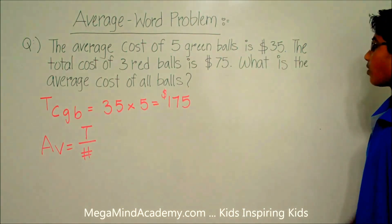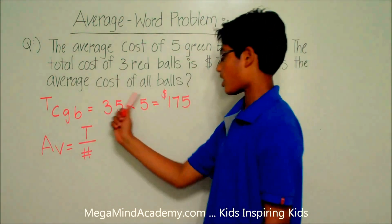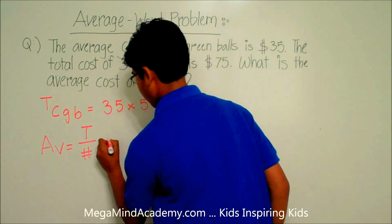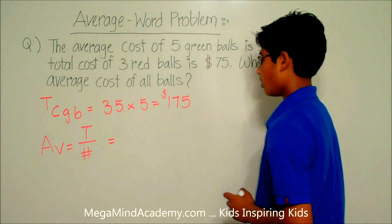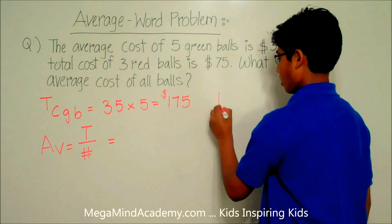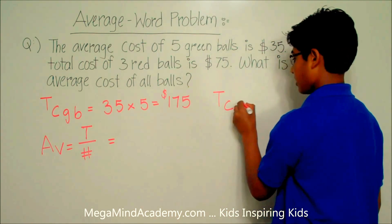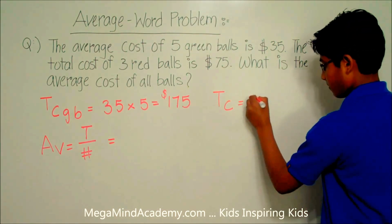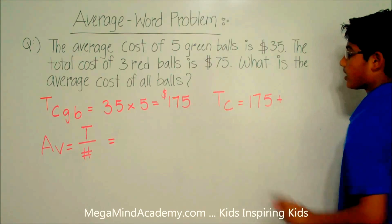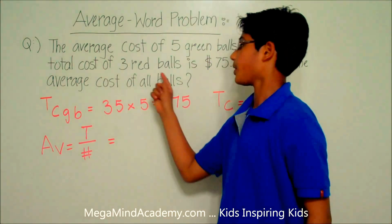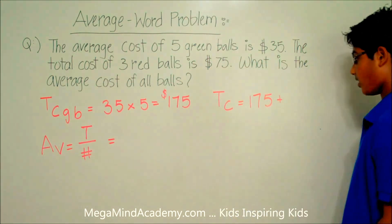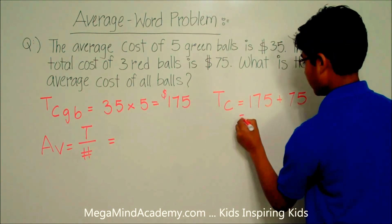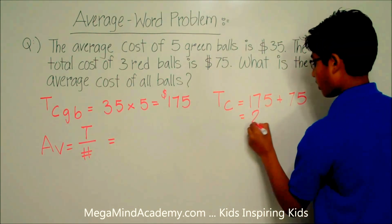So we need to find out what is the average cost of all balls. The average cost of all balls would use the total cost — TC — which is equal to $175 plus the total cost of three red balls, which is $75, giving us $250.